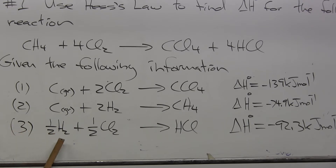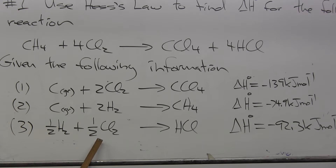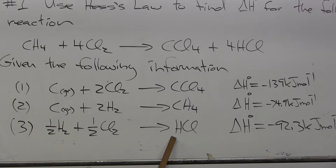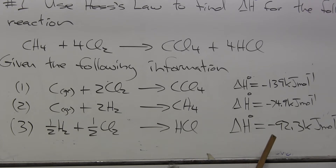Reaction three: one half of an H2, one half of a hydrogen molecule, plus one half of a Cl2, one half of a chlorine molecule, go together to produce a hydrogen chloride molecule, HCl. And ΔH° for that process is minus 92.3 kilojoules per mole.